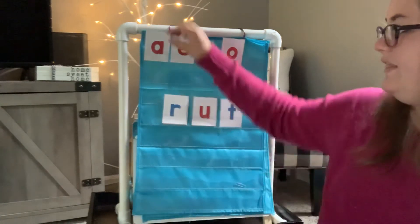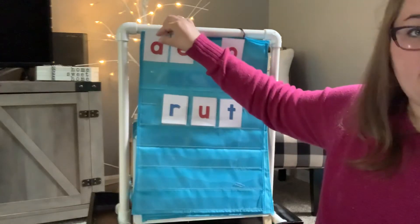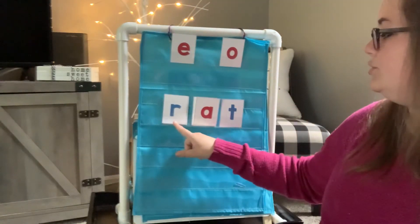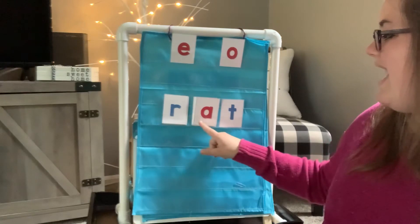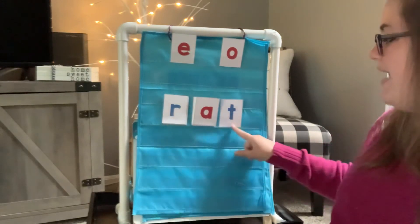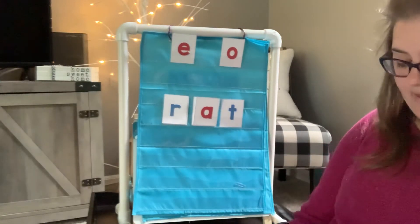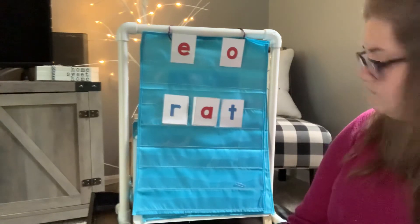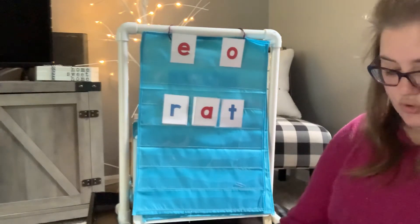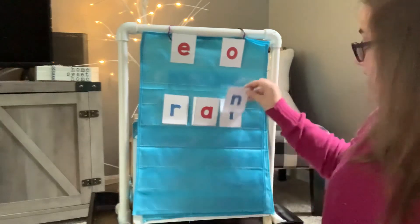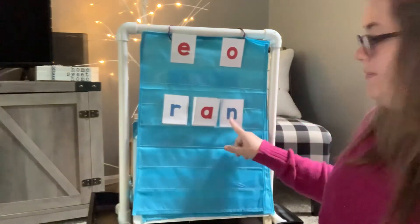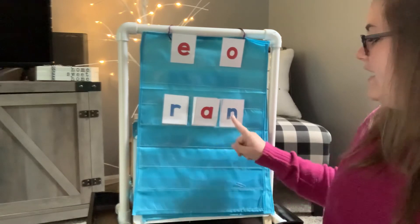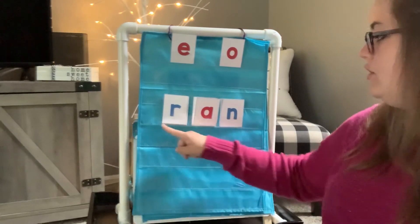Okay, I think I'm going to pick another vowel and put it in the middle. This time let's see — I think I want to change the ending sound this time. So I'm going to pick a new letter here: R, A, N — ran.